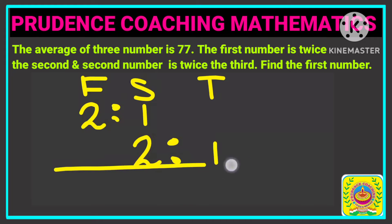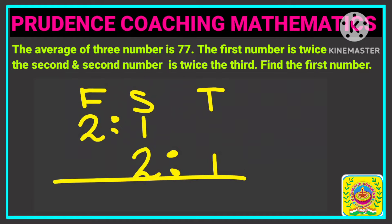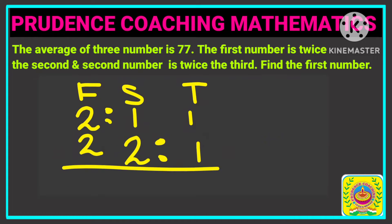So let us combine the ratio. Here we are going to use the cheating method. So here T does not have anything, S is 1, so T will take 1 from S. Similarly here F does not have anything, so it will look at S. It has 2, so it will take 2. Now we will multiply like this. So 2 times 2 is 4, 2 times 1 is 2, and 1 times 1 is 1. So this is our final ratio.